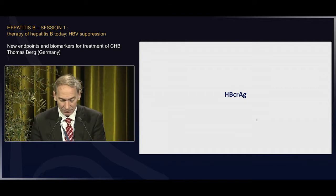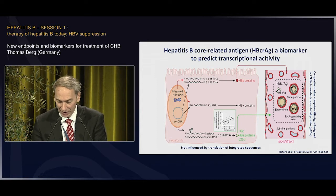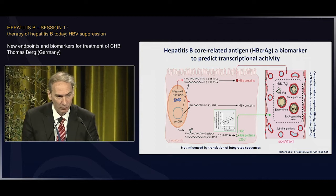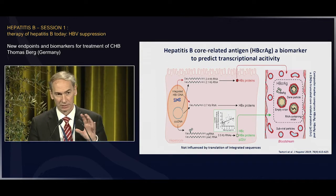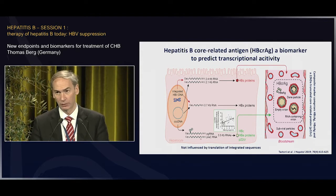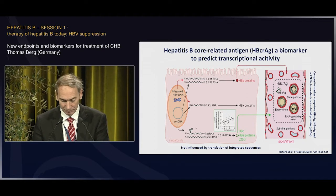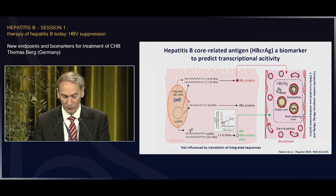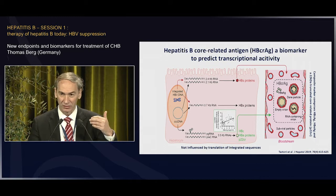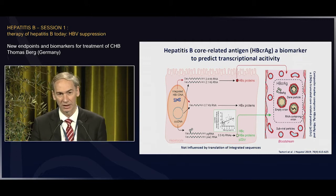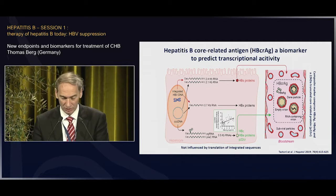Let's start with core-related antigen. Core-related antigen is a composite marker — it contains HBeAg, but also viral particles and the truncated core-related protein. The important point is that core-related antigen, unlike HBsAg, is not influenced by translation of integrated sequences. What you find in blood when measuring core-related antigen relates to transcription of cccDNA. It has been nicely shown that there is a clear correlation between the transcriptional activity of cccDNA — not so much the amount of cccDNA, but really the transcriptional activity — and the core-related antigen found in blood.